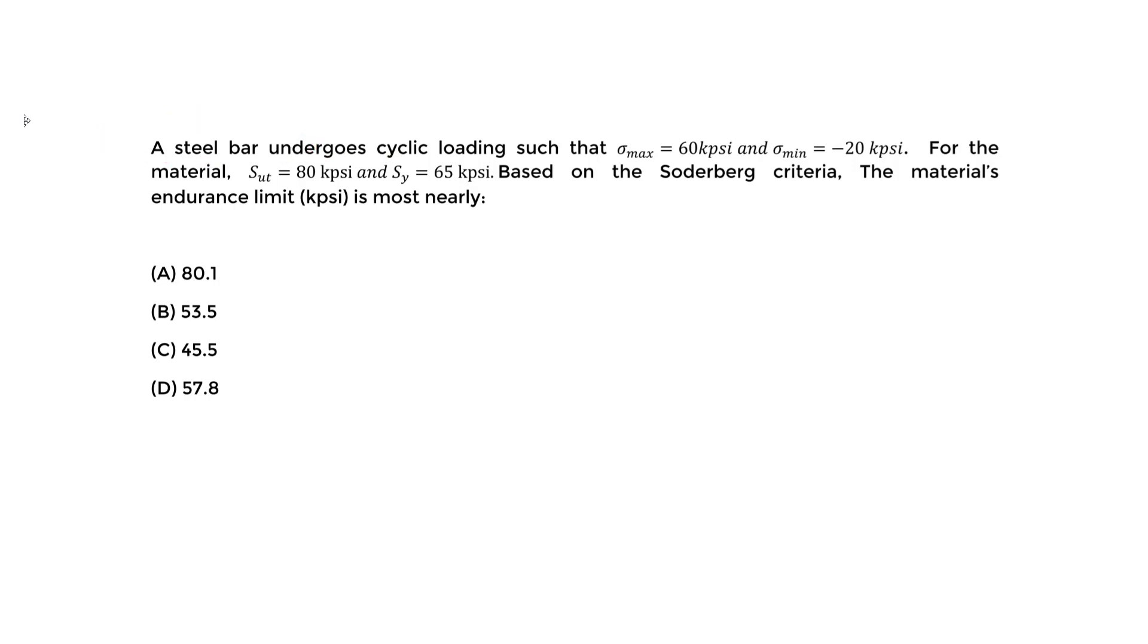We have a steel bar undergoing cyclic loading, such that the sigma max, the maximum stress, is 60 kpsi (kilopounds per square inch), and the minimum is negative 20 kpsi. So the minimum here is actually compressive—negative is compression by our sign convention, positive is tension.